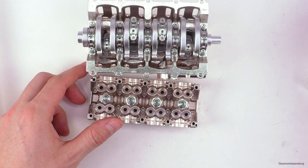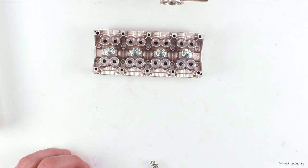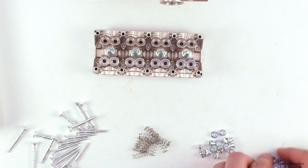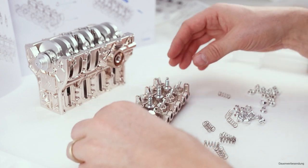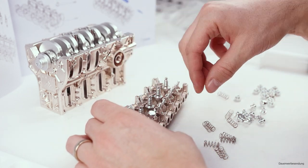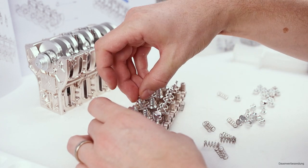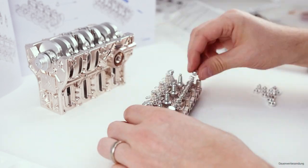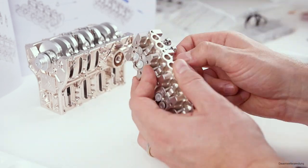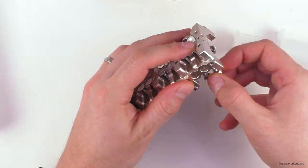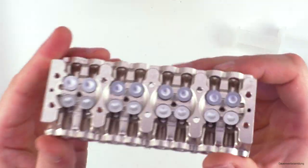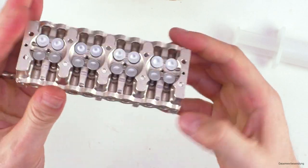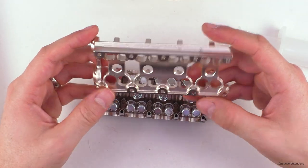Now the valves. And the valves get pretty complicated because for the valves we need the valves themselves, of course, the valve springs, the valve caps and the valve covers. Okay, here we go. Fully assembled with all the springs, spark plugs, caps and so on.